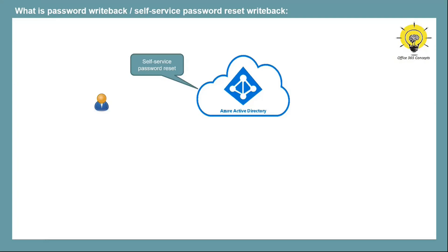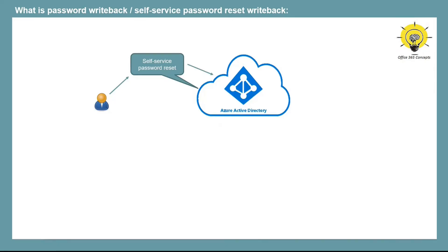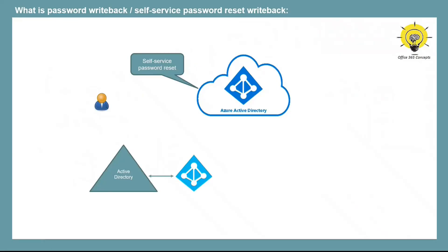Users can reset or change their own passwords using the self-service password reset portal. If your users are completely hosted in Azure Active Directory — directly provisioned — their new passwords will be updated in the Azure Active Directory database. But in a hybrid environment with on-premise Active Directory and Azure AD Connect deployed with password hash synchronization, passwords for on-premise users are stored in on-premise Active Directory, and Azure AD Connect synchronizes those passwords to Azure Active Directory.